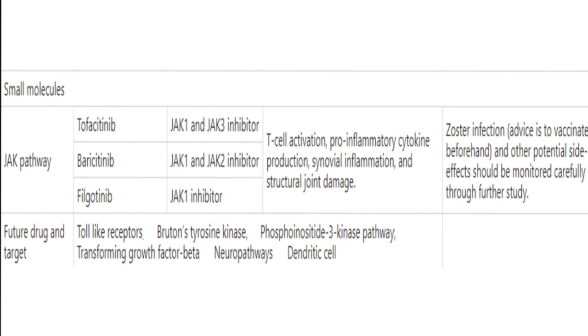JAK pathway inhibitors: tofacitinib is a JAK1 and JAK3 inhibitor; baricitinib is a JAK1 and JAK2 inhibitor. Herpes zoster infection is a notable side effect. Future drug targets include toll-like receptors, Bruton's tyrosine kinase, phosphoinositide 3-kinase pathway, dendritic cell neuro pathways, and transforming growth factor beta.